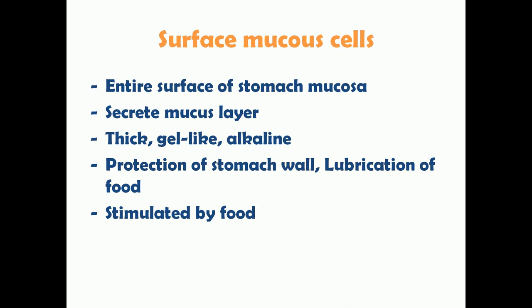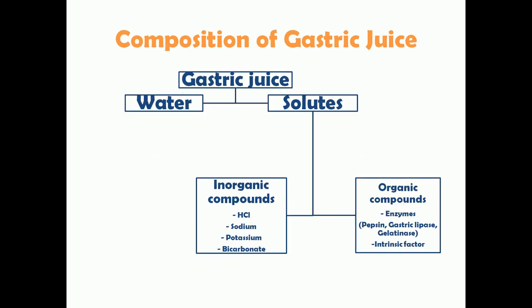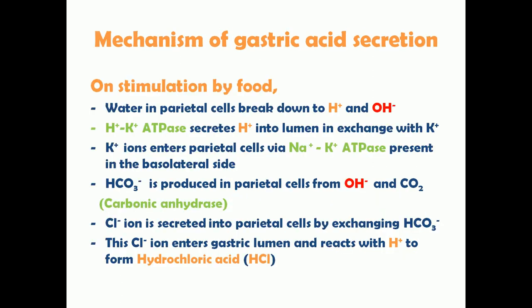Now let's look at the composition of gastric juice. It can be classified into water and solutes. The solutes include inorganic compounds such as hydrochloric acid (HCl), sodium, potassium, and bicarbonate, and organic compounds such as enzymes — pepsin, gastric lipase, and gelatinase — as well as intrinsic factor, which is important for vitamin B12 absorption.